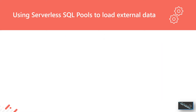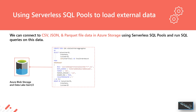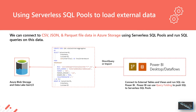When using serverless SQL pools, we can connect to file-based data — CSV, JSON, and Parquet — stored in Azure Storage, and run queries on that data. We can create a view which references data in a data lake; for example, a view that aggregates data stored in the data lake. Then we can connect via Power BI, which will see that view as if it were a regular SQL view. We can also create external tables and run SQL, and Power BI will use query folding to push the SQL down to the serverless SQL pool itself.